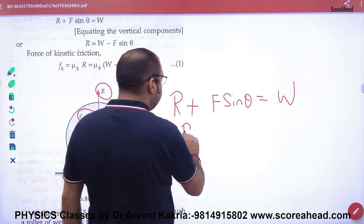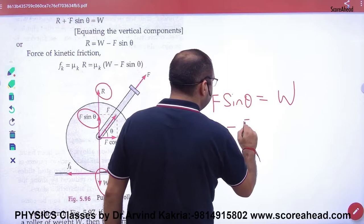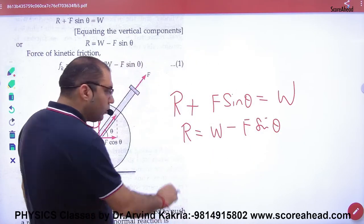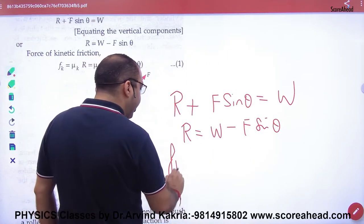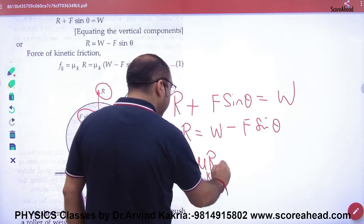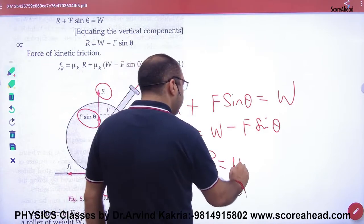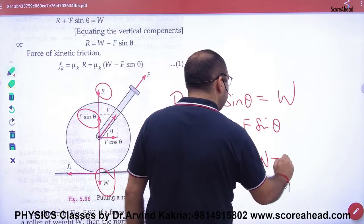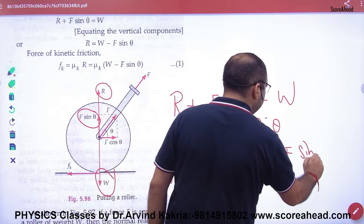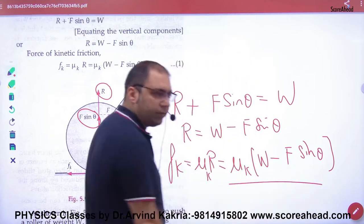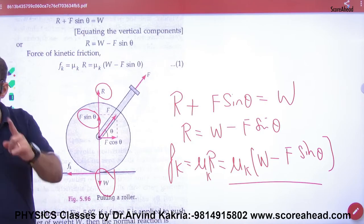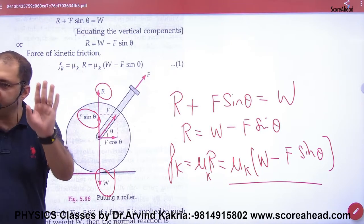So the normal reaction R is equal to W minus F sin theta. The force of kinetic friction is mu times the normal reaction, so friction equals mu times (W minus F sin theta). First you find normal reaction, then multiply by mu to get the force of friction.